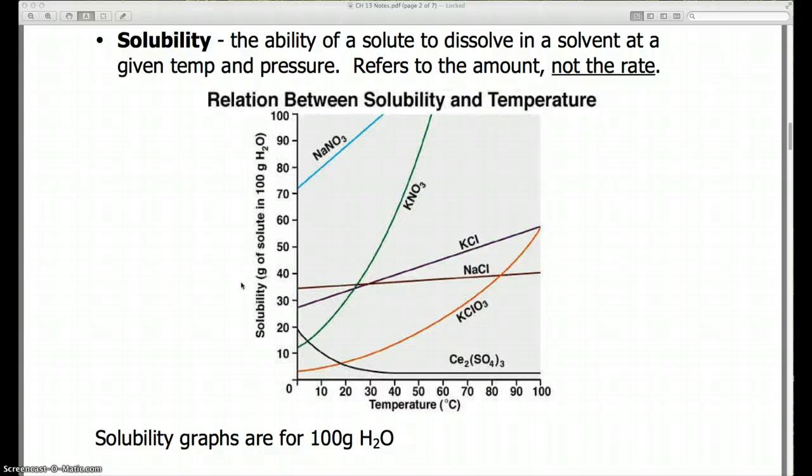This graph shows solubility curves. And the way we read this is the graph is for a hundred grams of water. So if we have a beaker with a hundred grams of water in it, this shows at various temperatures how much of each of these chemicals we can dissolve into that 100 grams of water.